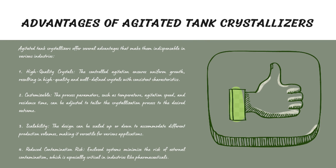Agitated tank crystallizers offer several advantages. The first is high-quality crystals — controlled agitation ensures uniform crystal growth. For example, in the sugar industry, they produce crystals with consistent shape and size, which is essential for product quality. The second advantage is customizability — adjusting process parameters allows tailoring crystallization to specific needs. In the chemical industry, manufacturers use agitated tank crystallizers to produce different polymorphs of a compound by fine-tuning parameters like temperature and agitation speed.